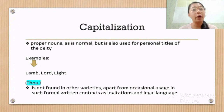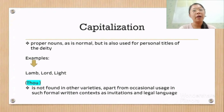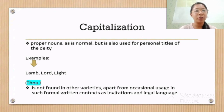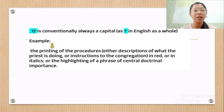Capitalization is used for proper nouns as normal, but is also used for personal titles of the deity — for example, Lord and Light — and for certain pronouns referring to him, like Thou, which is not found in other varieties, apart from occasional usage in such formally written contexts as invitations and legal language. The distinction between titles describing the deity in fact depends on this use of capitalization. The vocative O is conventionally always a capital, as is I in English as a whole.